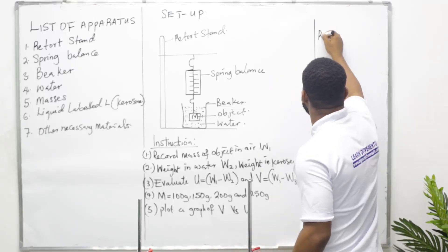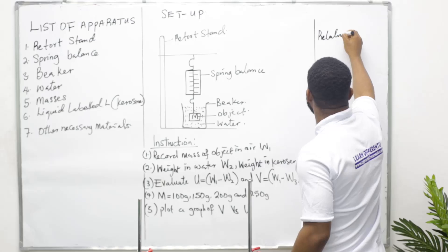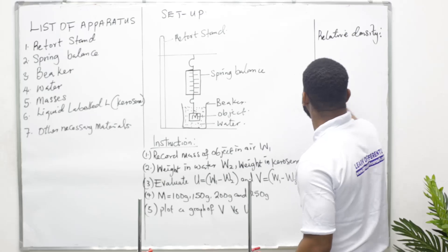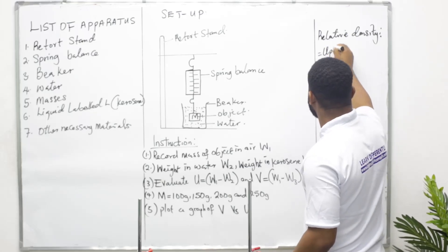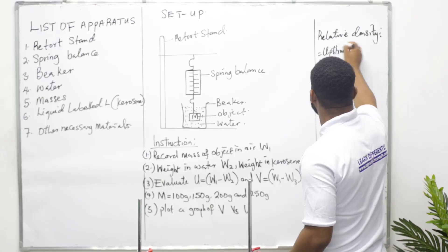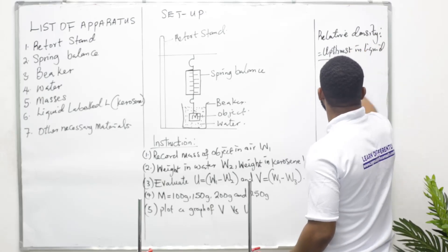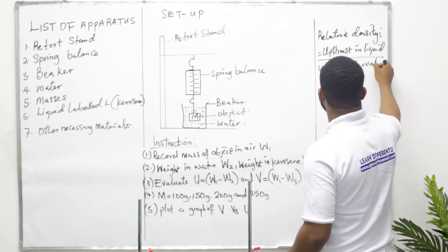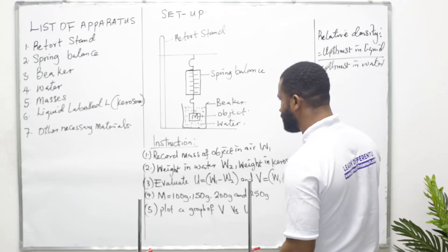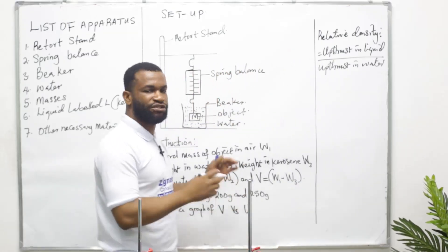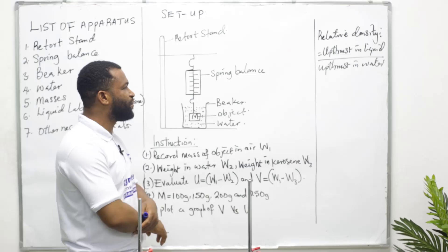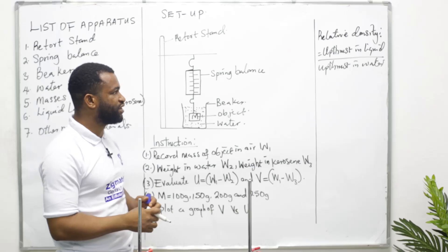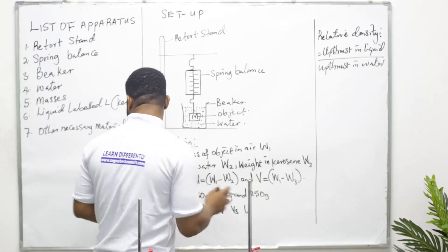Then plot a graph of V versus U. The graph of V versus U is very important because it shows us relative density. Relative density is equal to uptrust in liquid all over uptrust in water. So if that is the case, then we know that what we are doing in this experiment is to find the relative density of kerosene, and that is what we intend to achieve.